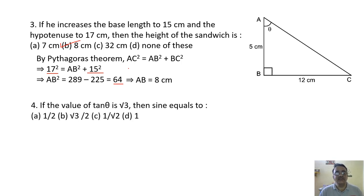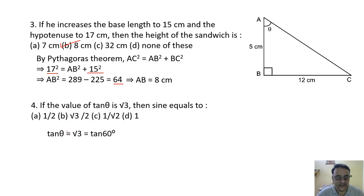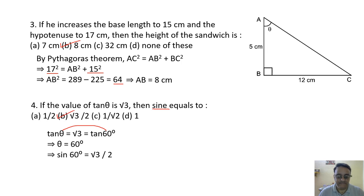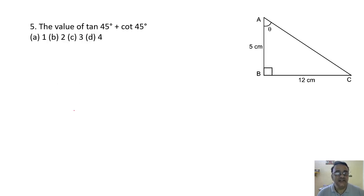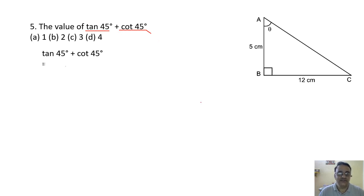Question 4: tan θ = √3. For which angle is tan = √3? That's 60°, so θ = 60°. sin 60° = √3/2. The correct option is option B. Question 5: tan 45° + cot 45° = 1 + 1 = 2. The correct option is option B.